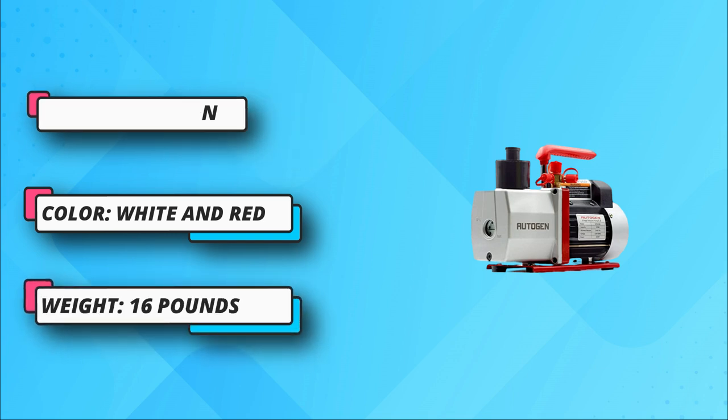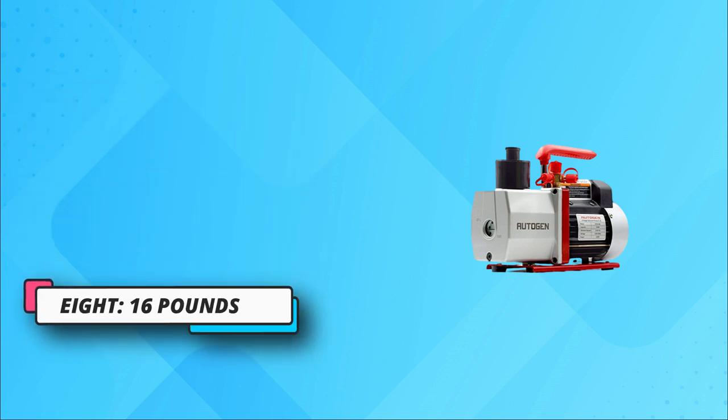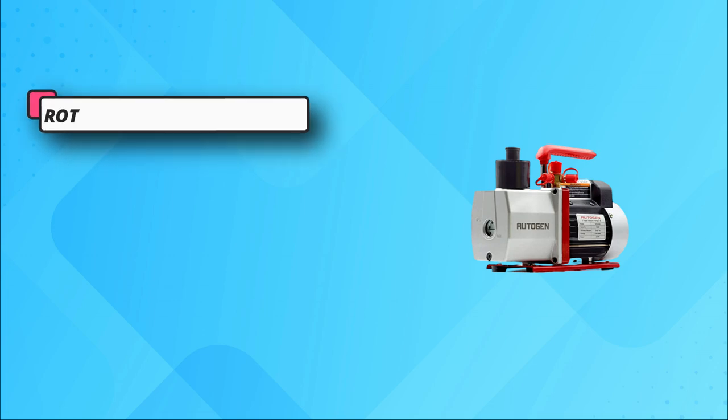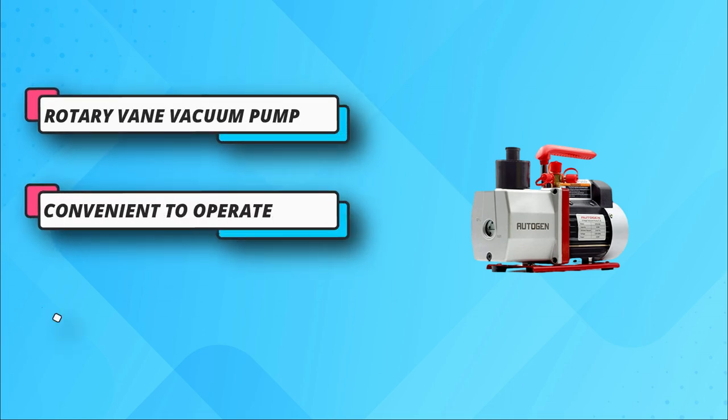Environment protecting design. The tank is separated and there are separating devices at the exhaust port. It can effectively avoid oil spraying and reduce pollution.